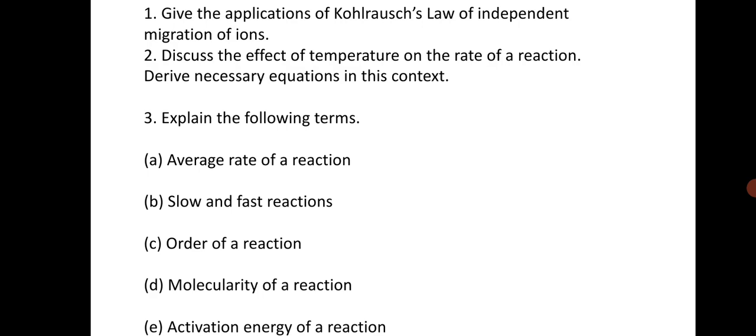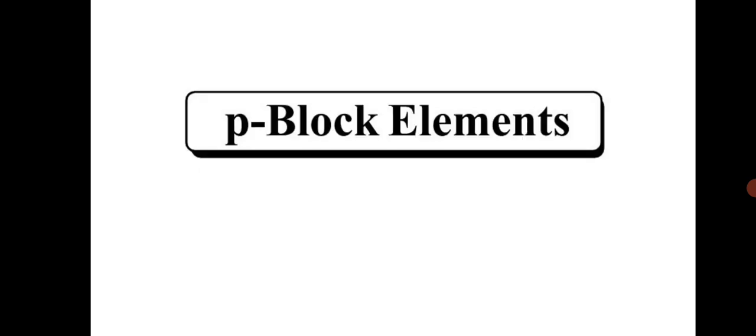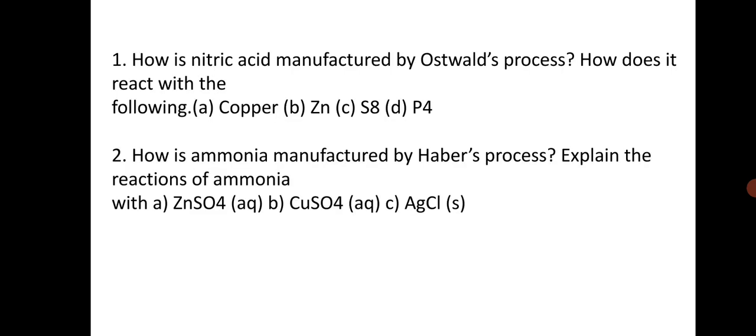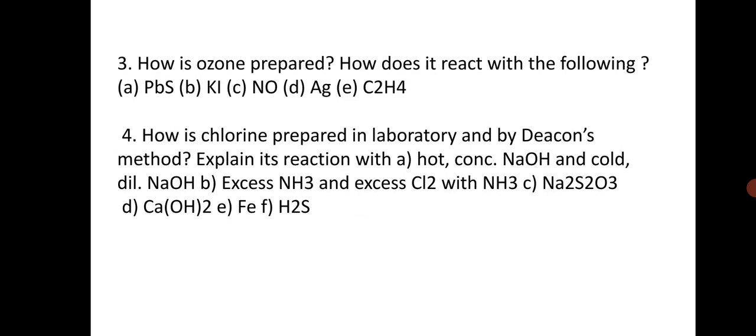Next is p-block elements, very important LAQ questions. The first is how is nitric acid prepared by Ostwald's process and how does it react with the following. Next is how is ammonia manufactured by Haber's process, explain the reactions of ammonia with the following reactions. Third one is how is ozone prepared, how does it react with KI, KNO, AgCl, C2H4. Fourth question is how is chlorine prepared in laboratory by Deacon's method, explain reactions with the following. These are four important questions for p-block.